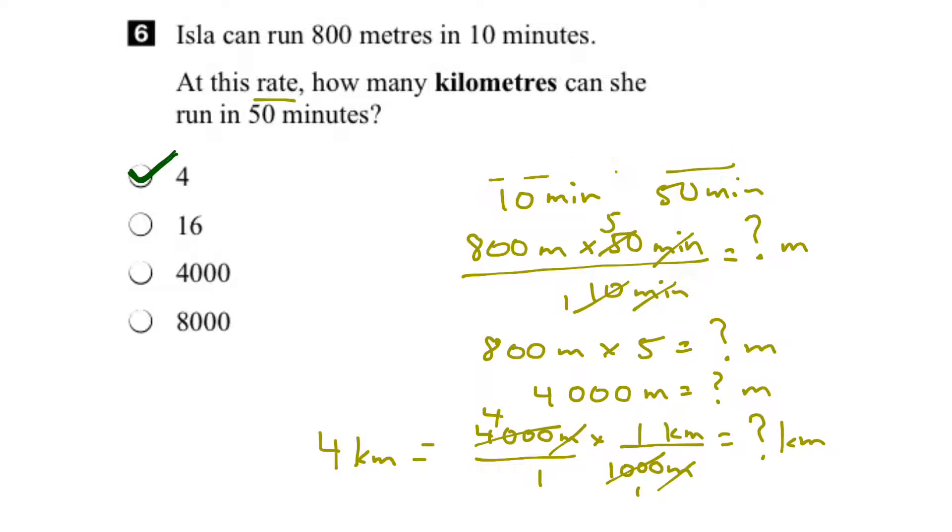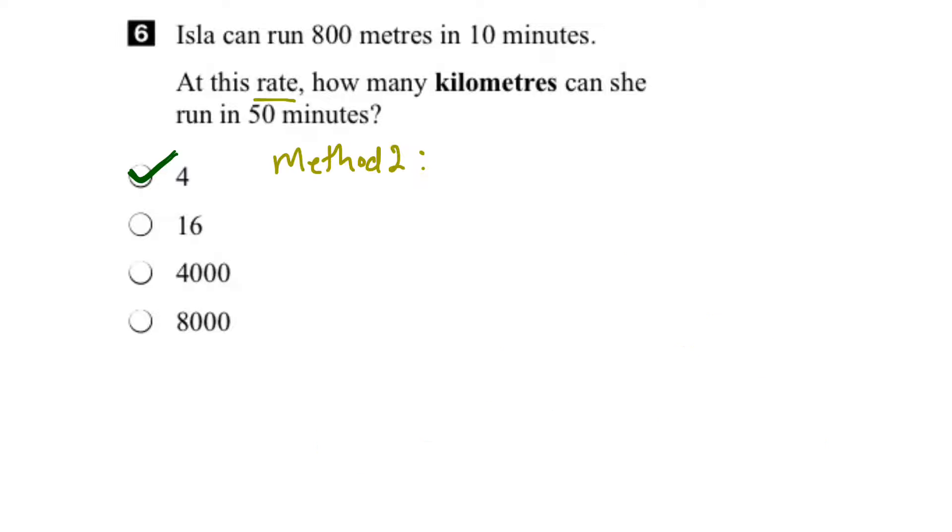We can start with the same rates. We've got 800 meters in 10 minutes. And then what we do is we continue to multiply this rate by a series of fractions until we get the units that we're looking for, in this case kilometers. And the units again become really critical for this.